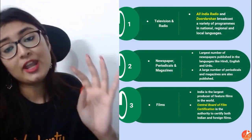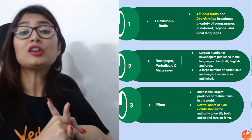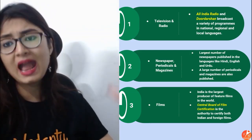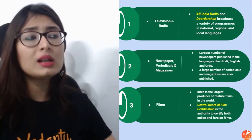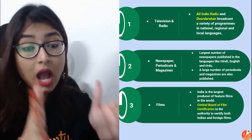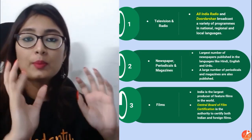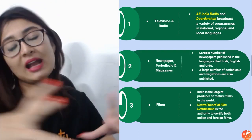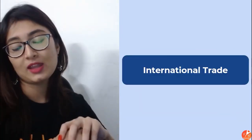Important mass communication channels: All India Radio and Doordarshan — Doordarshan is one of the largest terrestrial networks in the world, broadcasting multiple programs in national, regional, and local languages. In India, newspapers, periodicals, and magazines are published in more than 100 languages and dialects; the largest publications are in Hindi, English, and Urdu. India is the largest producer of feature films in the world. The Central Board of Film Certification is the authority to certify both Indian and foreign films.